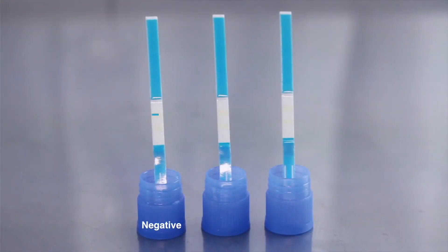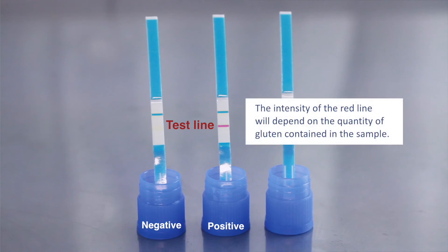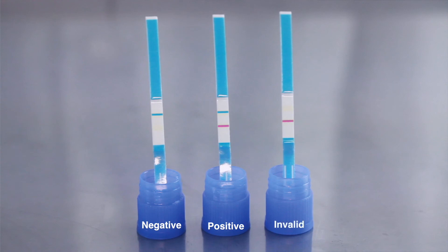For a negative result, a single blue line or control line appears in the central part of the test. For a positive result, a red line will appear below the blue control line. If the blue control line does not appear, the test is considered invalid. When this occurs, repeat the process using a new test.